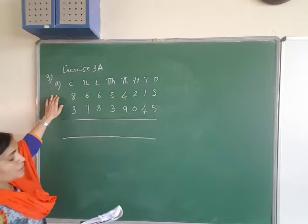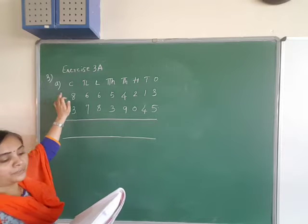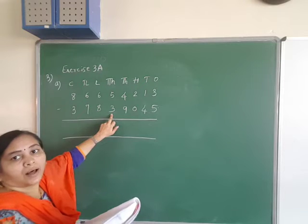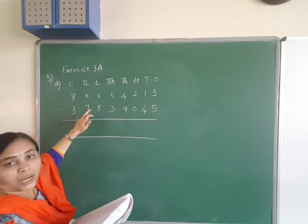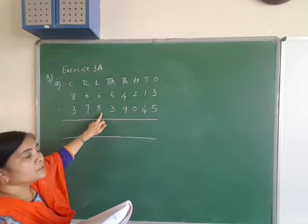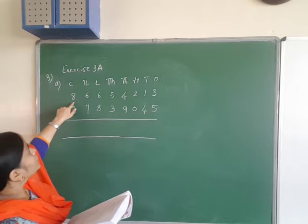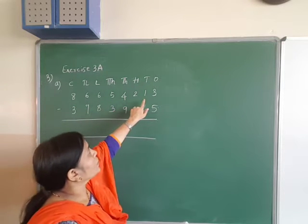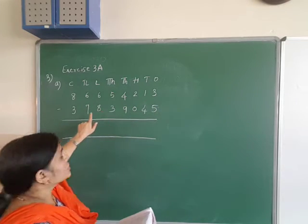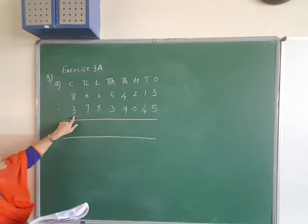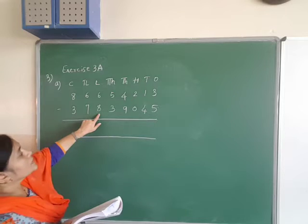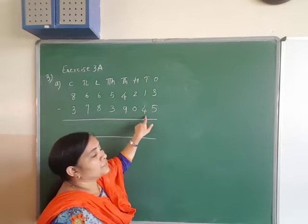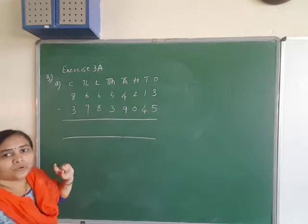The question is already given in the textbook. The numbers given — you have to subtract these two numbers. Here, 8 crore 66 lakh 54,213, you have to subtract 33 crores 78 lakhs 39,045.